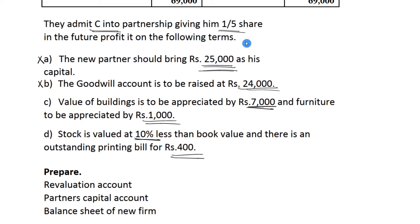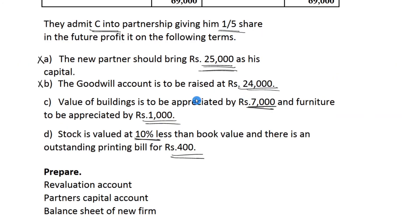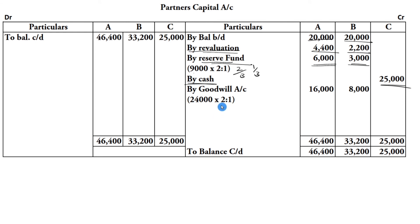C brings in $25,000 capital - partners capital is higher by cash $25,000. Goodwill is to be raised at $24,000 - goodwill account is credited. Goodwill of $24,000 is distributed in old profit sharing ratio 2:1: A gets $16,000 and B gets $8,000. So goodwill is raised, not written off. Add all amounts for A: 4,400 plus 6,000 plus 16,000 = 46,400.